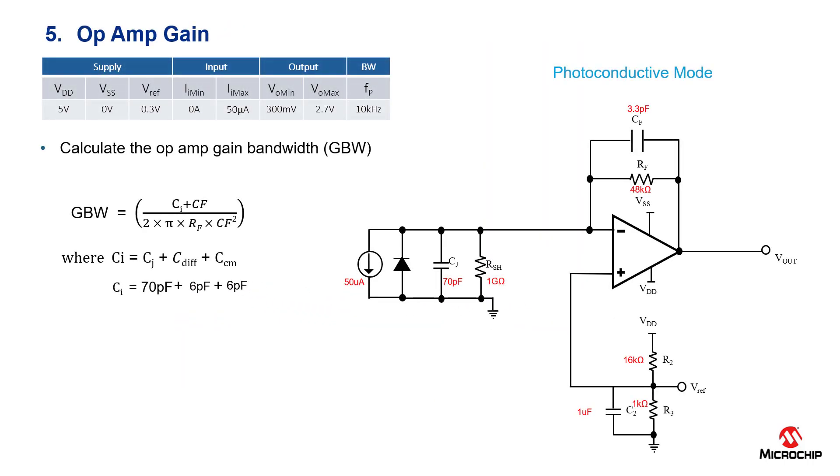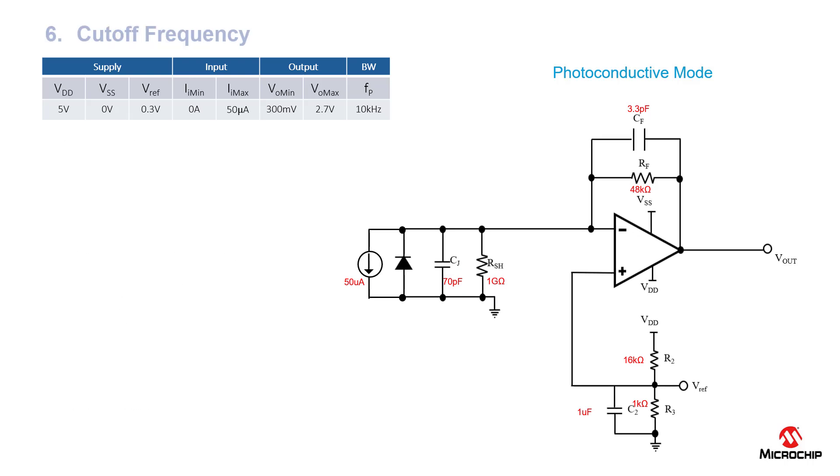We plug in all those values and we get that the minimum gain bandwidth for this design is 259 hertz, and since the typical gain bandwidth of the MCP6491 is 7.5 megahertz, we meet this requirement.